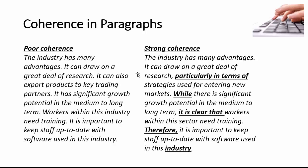Compare that to the other one: 'The industry has many advantages. It can draw on a great deal of research, particularly in terms of strategies used for entering new markets. While there is significant growth potential in the medium to long term, it is clear that workers within this sector need training. Therefore, it is important to keep staff up to date with software used in this industry.' We are getting a good range of language, good sentence variation, relative clauses, connecting phrases, and synonyms so that we are not always repeating the same words — a good example of coherence.